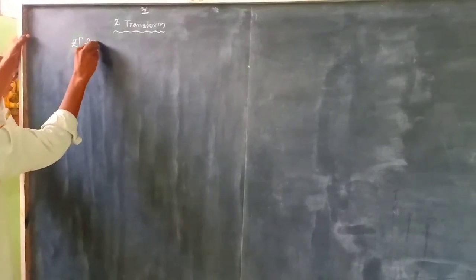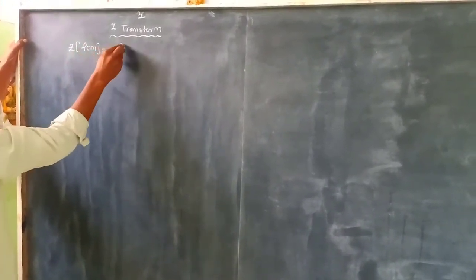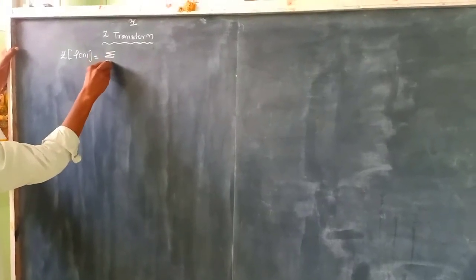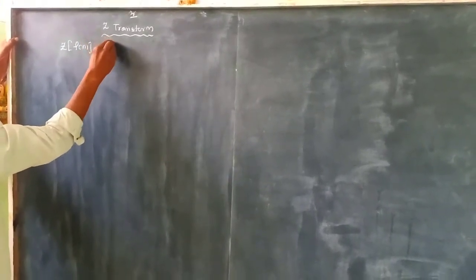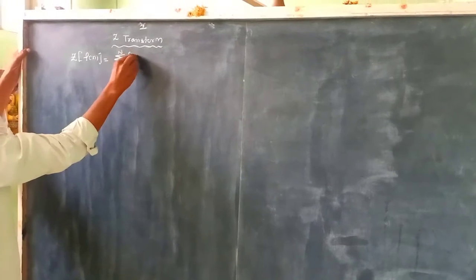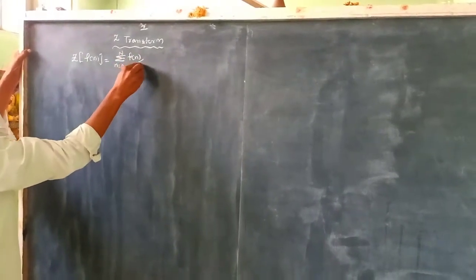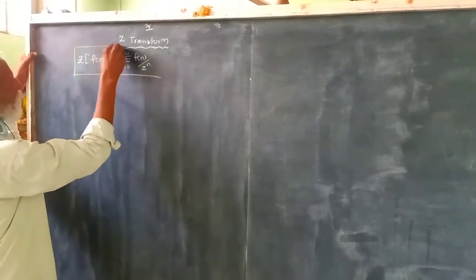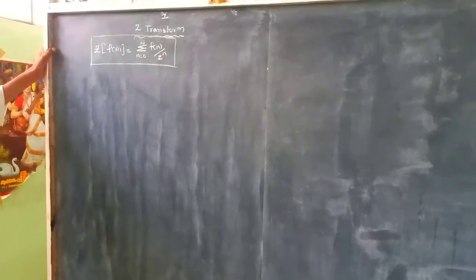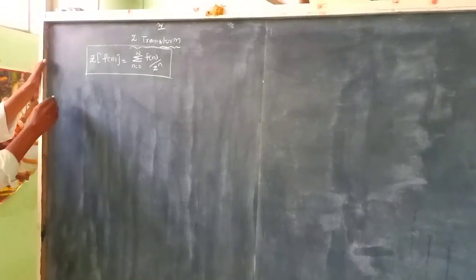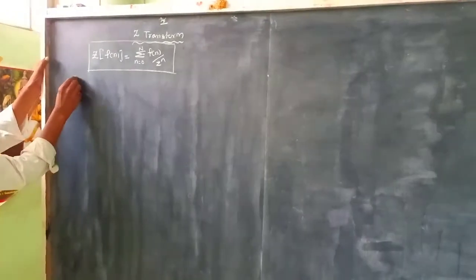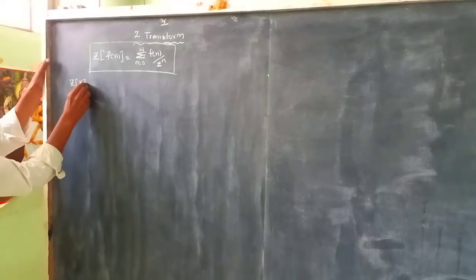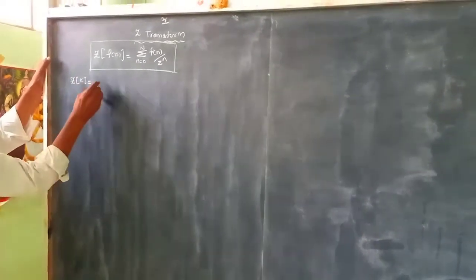The Z transform of f(n) is equal to summation n equals 0 to infinity, f(n) by z to the power n. Let's derive standard results. The Z transform of summation k equals 0 to n, k by z^n, where k is constant.